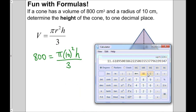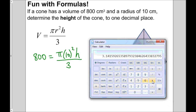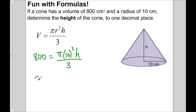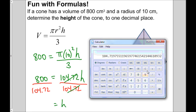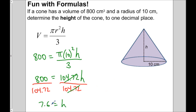Pi times 10 squared divided by 3 is 104.72. So all of that turns into 104.72, and we still have h. This becomes a simple one-step equation — I need to isolate h. Since 104.72 is multiplying h, I divide both sides by 104.72. These values divide out, so I'm left with h on the right. On the left, 800 divided by 104.72 gives 7.6, to one decimal place. So the height is 7.6 centimeters.